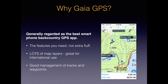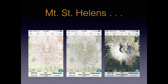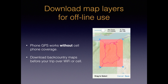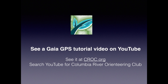And third, it's easy to manage a large collection of tracks and waypoints. As an example of map layers, here are three images from Gaia for Mount St. Helens — screen grabs taken right from my phone: a standard topo map on the left, an open-source hiking map in the middle, and a satellite view on the right. Note that you do not need cell phone coverage to use your phone as a GPS receiver; however, you do need to download map layers over Wi-Fi or cell coverage for use when you don't have coverage. I've made a short tutorial video on how to use Gaia GPS — see it at croc.org or search YouTube for Columbia River Orienteering Club.